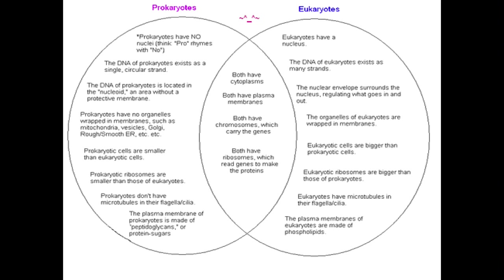Prokaryotes don't have microtubules in their flagella or cilia, whereas Eukaryotes do have microtubules in their flagella and cilia. The plasma membrane of Prokaryotes is made up of peptidoglycans, or protein sugars, whereas the Eukaryotic plasma membranes are made up of phospholipids. They both have cytoplasms, a plasma membrane, chromosomes which carry the genes, and ribosomes which read genes to make proteins.